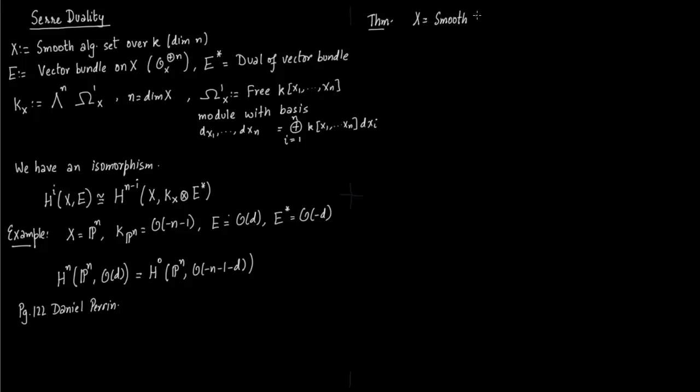So the theorem is: say x is a smooth projective curve over k. Then the genus of x is equal to h0 of x, kx. So we are relating the genus to the canonical sheaf. Notice that we just have ω1 here because it's a curve. So you are only talking about dimension 1. We do not have to worry about exterior products in this case.